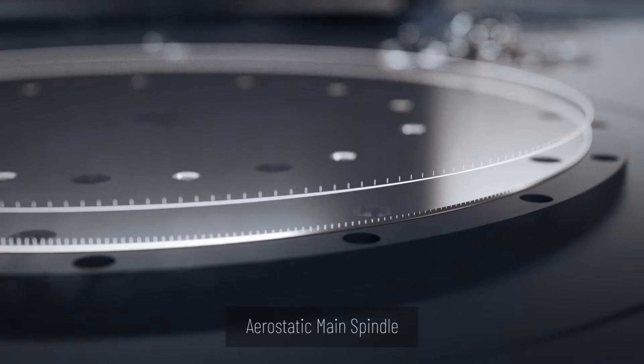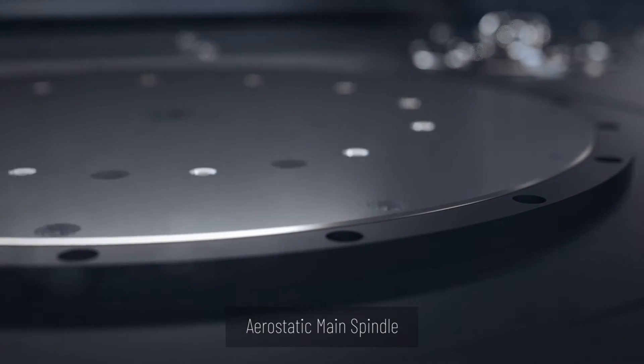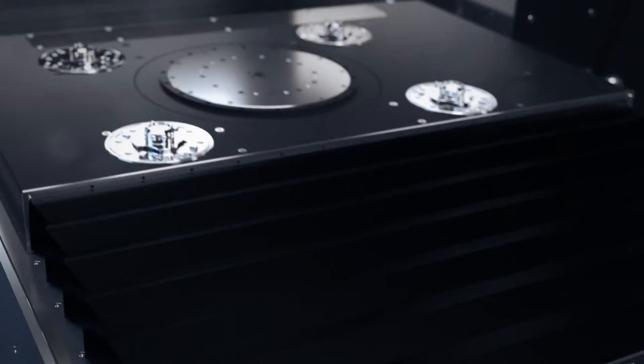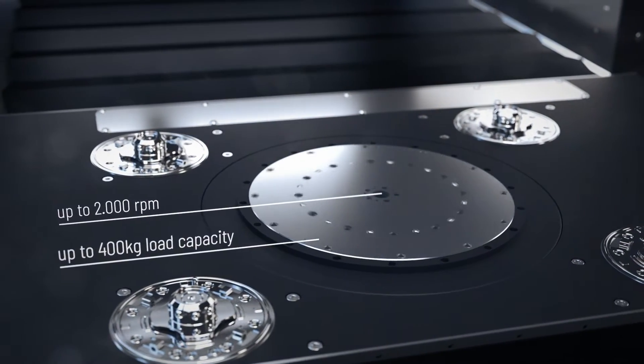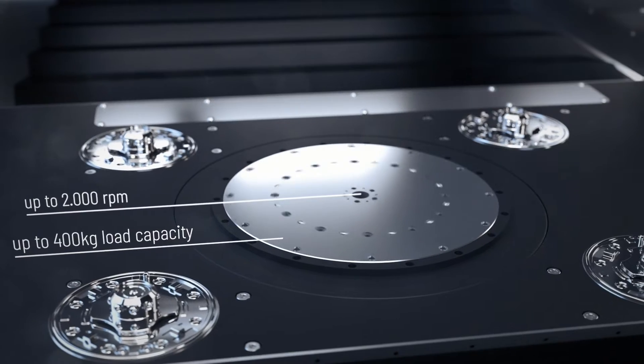The heavy-duty aerostatic spindle unifies both speeds of up to 2,000 rpm or parts weights of up to 400 kg. The parts and fixture load is not influencing structural cantilevers in the machine system.